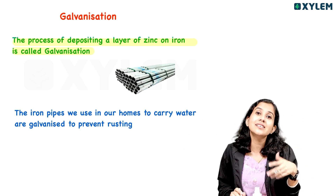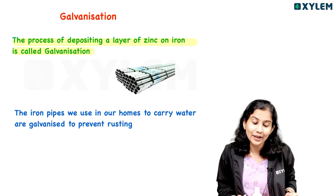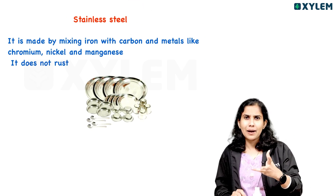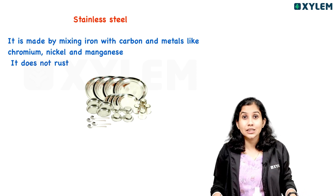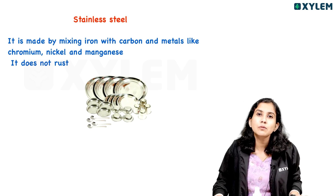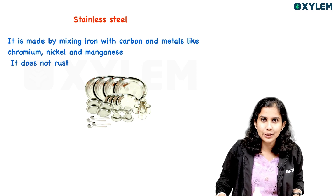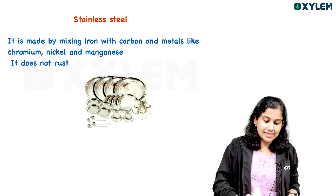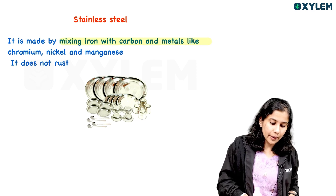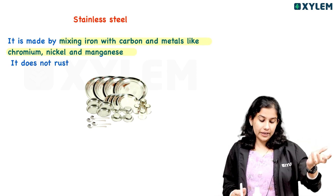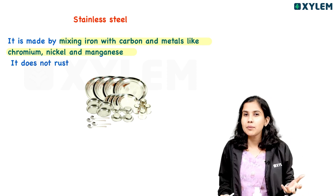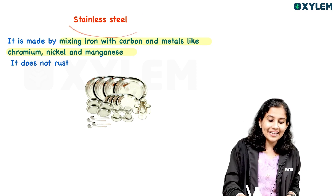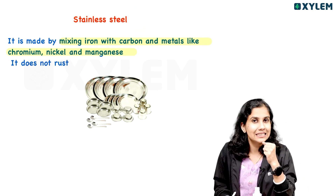The next method is stainless steel. Stainless steel is made by mixing iron with carbon and other metals such as chromium, nickel, and manganese. This mixture forms stainless steel, which resists rusting.